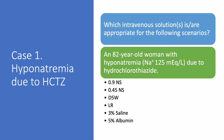Case number one: hyponatremia due to hydrochlorothiazide. What you have to do in these cases is to choose the intravenous solution or solutions — because there can be more than one correct answer — that is or are appropriate for the given scenario. We have an 82-year-old woman with hyponatremia, sodium 125 mEq/L, due to hydrochlorothiazide. Are you going to give 0.9% normal saline, 0.45% normal saline, D5W, LR, 3% saline, or 5% albumin?